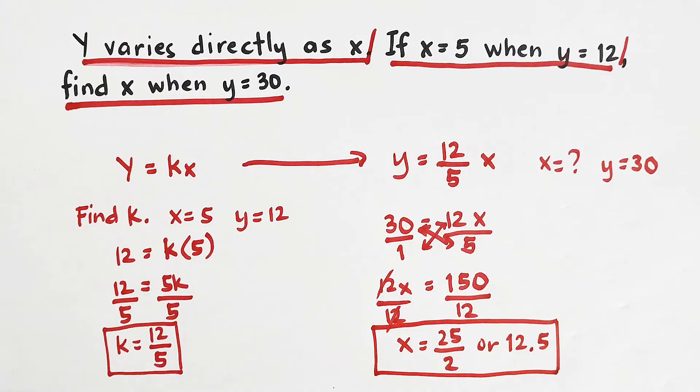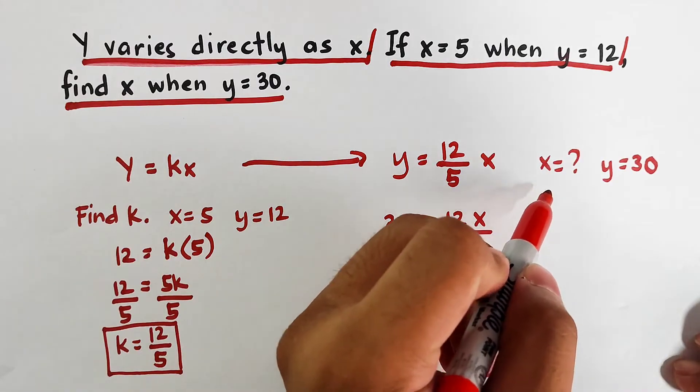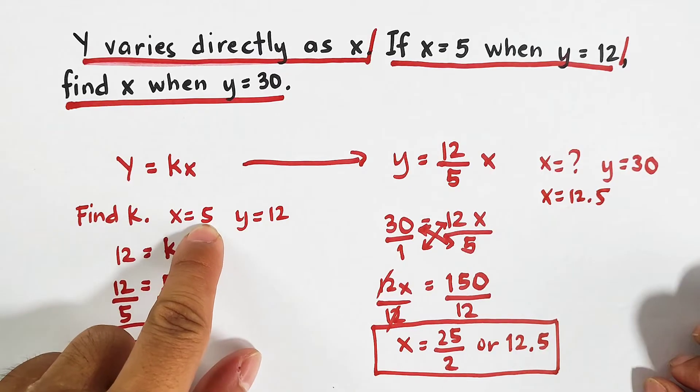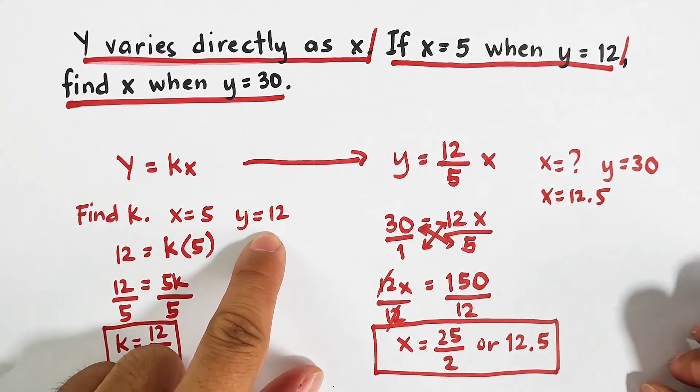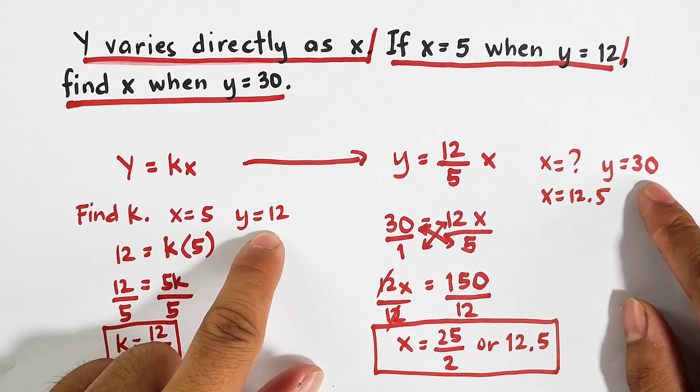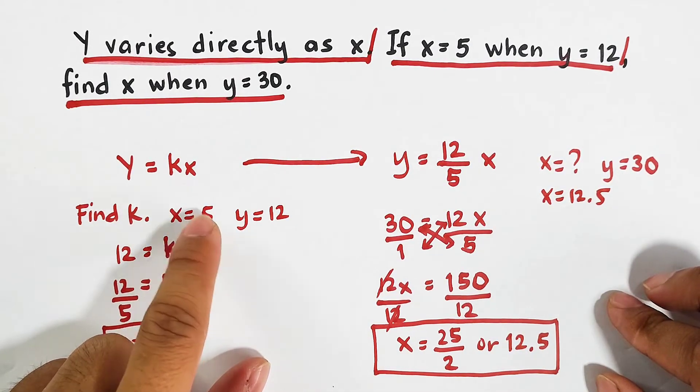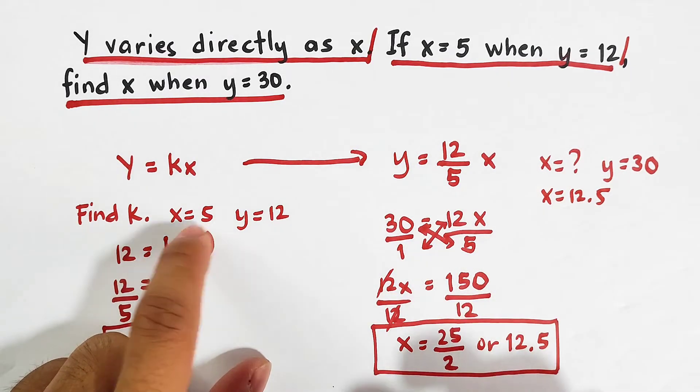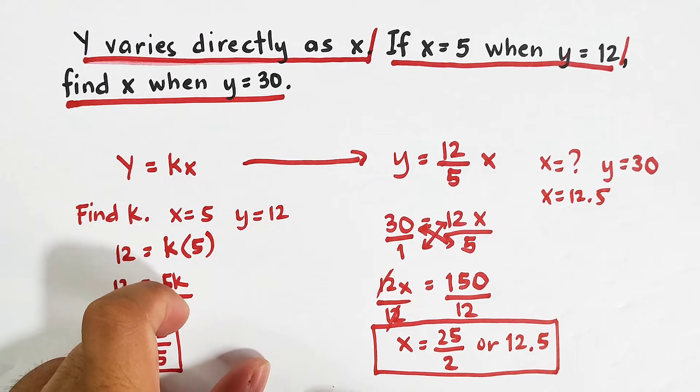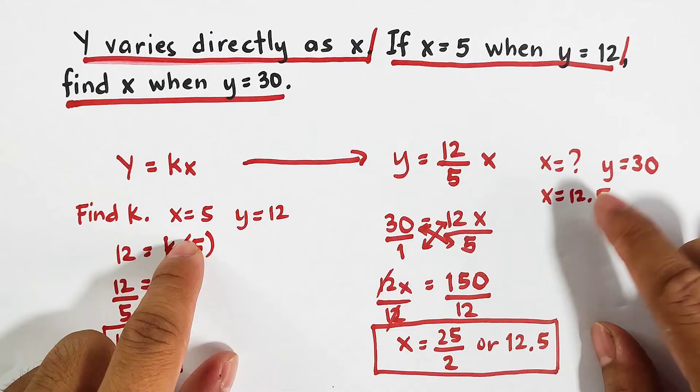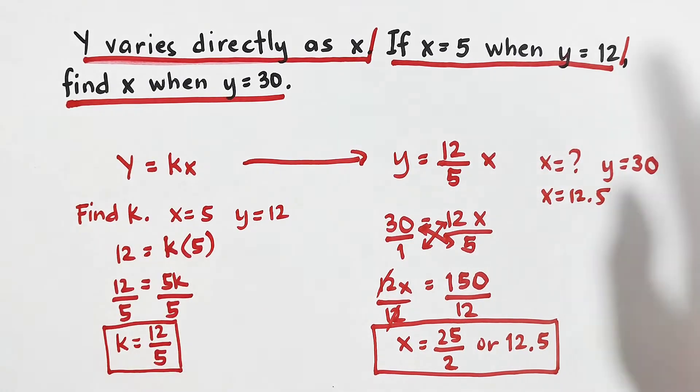Now let us check if this is really a direct variation. Look. Your x is 12.5. As you can see from your y here is 12. And it became 30. So it goes up. Your x is 5. So we will expect that since the y value goes up, the value of x that we'll get will also go up. Or it is greater than 5. As you can see, 12.5 is greater than 5. Therefore, this one is under a direct variation.